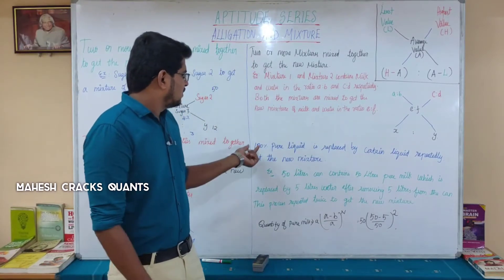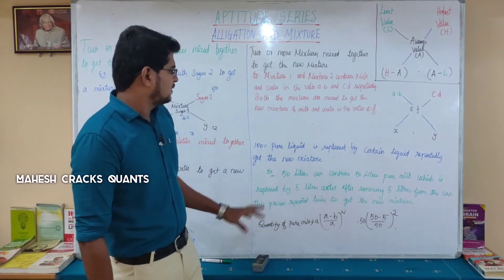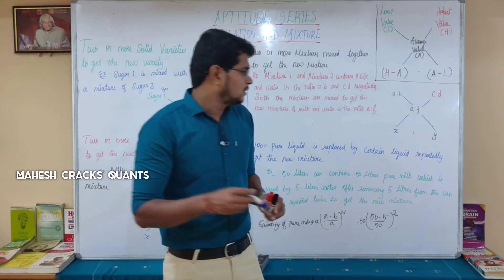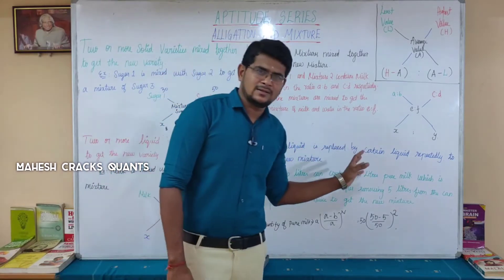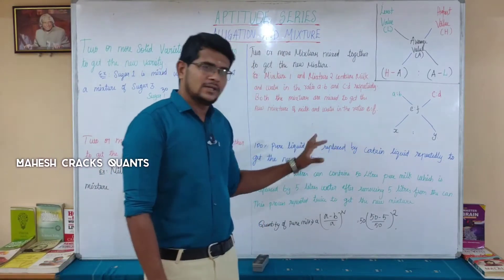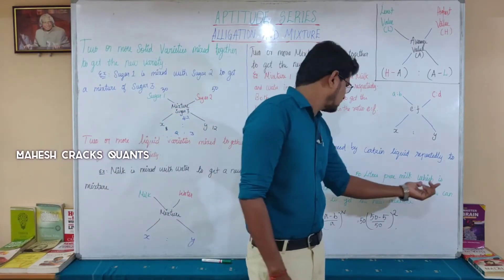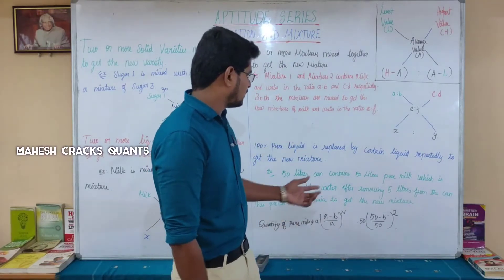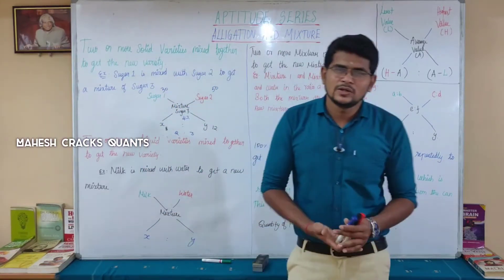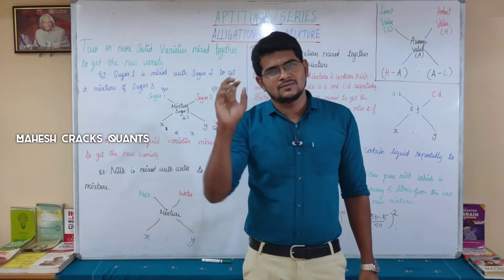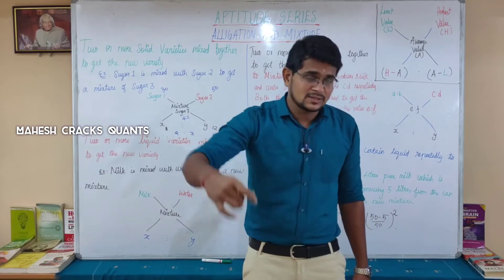Finally, there is a type where 100% pure liquid is replaced by another liquid repeatedly to get a new mixture. For example: a 50-liter can contains 50 liters of pure milk. 5 liters are removed and replaced with 5 liters of water. This process is repeated twice to get the new mixture.